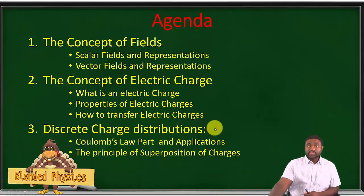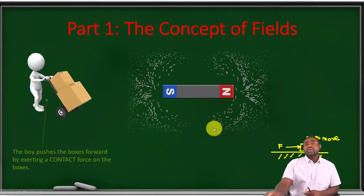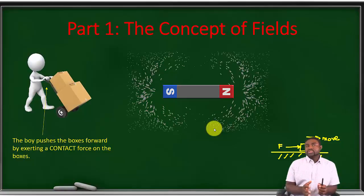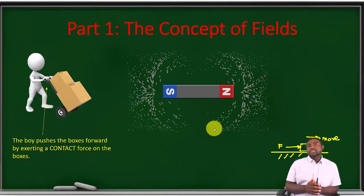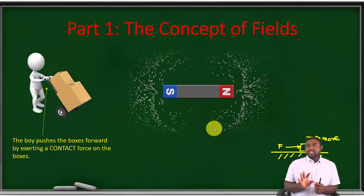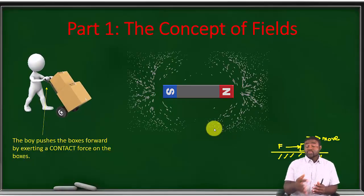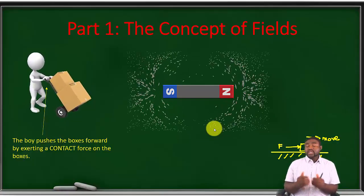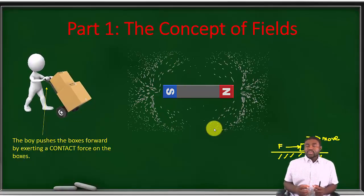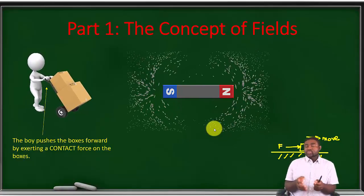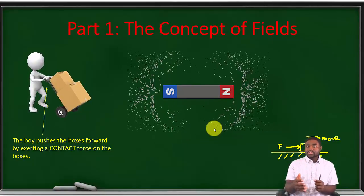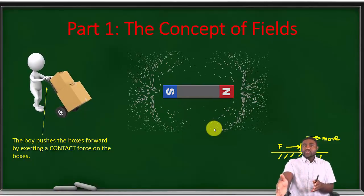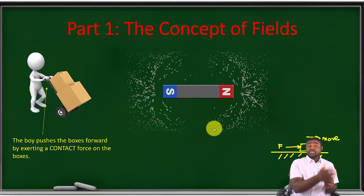Suppose a boy pushes a box across the floor. The boy interacts with the box, exerting a force on it that causes the box to move forward. The force the boy exerts on the box is called a normal force, and it's an example of a contact force. Physically it makes sense because we can see the boy pushing the box, so it's logical to conclude that the box moves because the boy is pushing it.